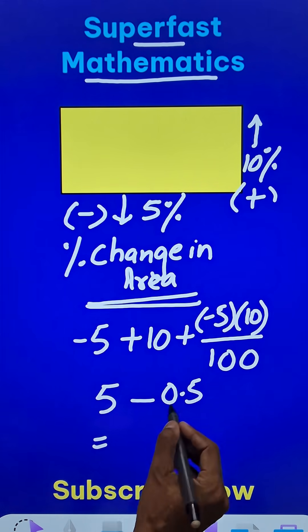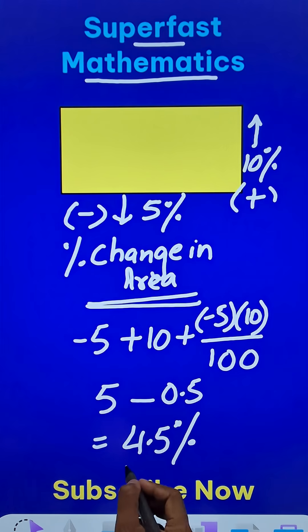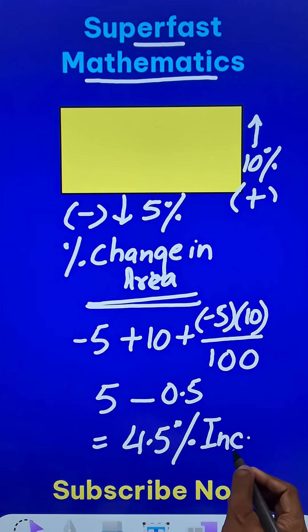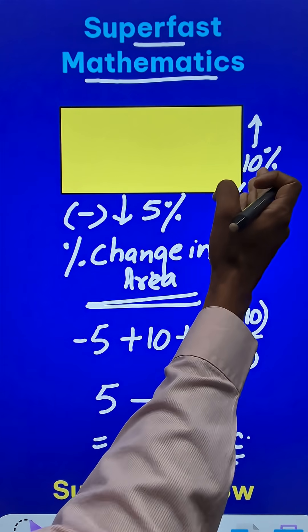So what is the answer? It is positive 4.5, and therefore 4.5% increase in the area will result as a result of change in these dimensions.